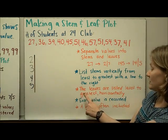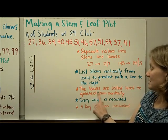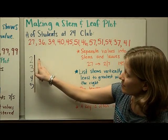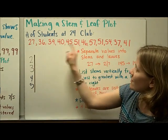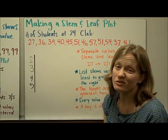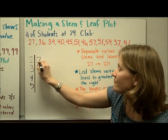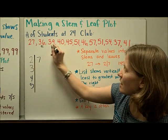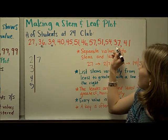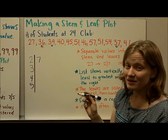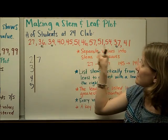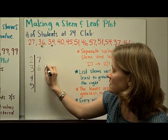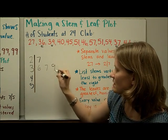Next, the leaves are listed least to greatest horizontally. Starting with the 20s, I only have one piece of data — 27 — so that's an easy one. Now going to the 30s, I'll mark them with a dot: 36, 37, and 39. I list those in order from least to greatest: 6, 7, 9.